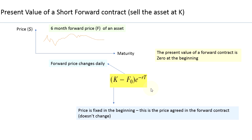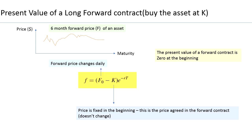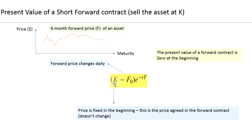Remember, K will not change whether you are calculating the present value of a long or a short forward contract, because K is the price you entered into the contract at — K is fixed. But the futures price F will change daily. The easiest way to remember the two formulas: if you are long the forward contract you are paying K at expiry, so it is minus K in the formula (giving F − K); if you are short the forward contract you are receiving K, so it is plus K (giving K − F). This distinction helps you avoid mixing up the two formulas.